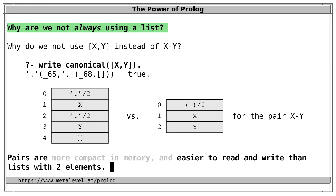Of course, the compactness argument is the least important, because it depends heavily on the Prolog implementation. In fact, a Prolog implementation could perform clever optimizations that a list with two elements is stored just as compactly as a pair.